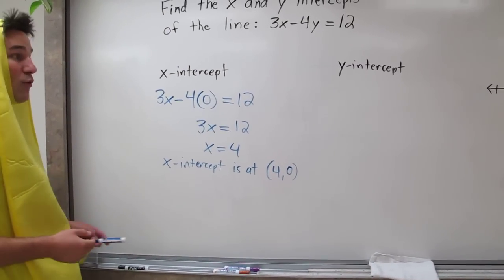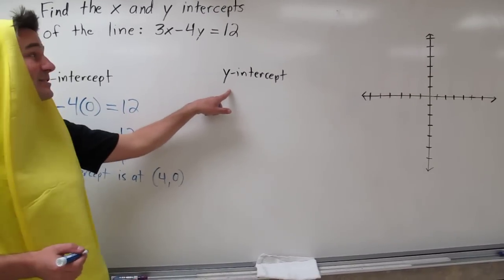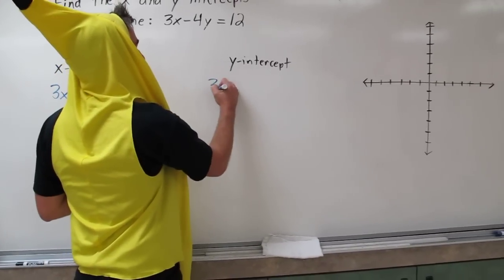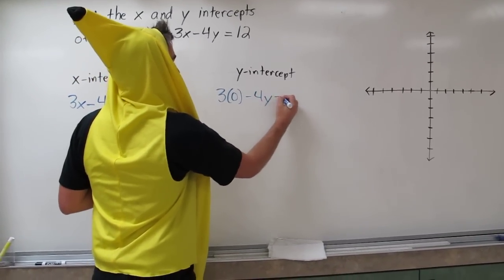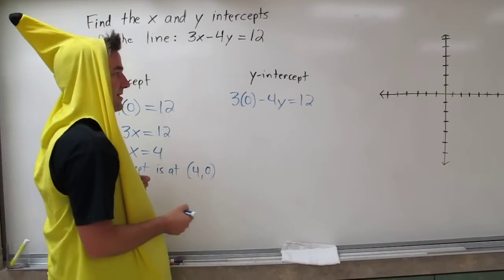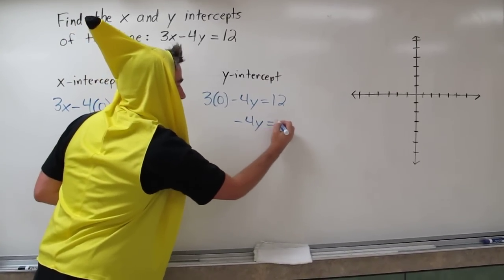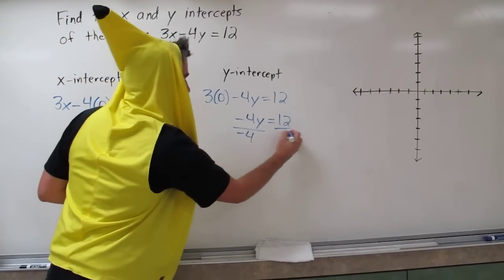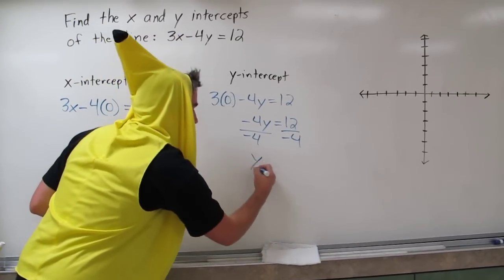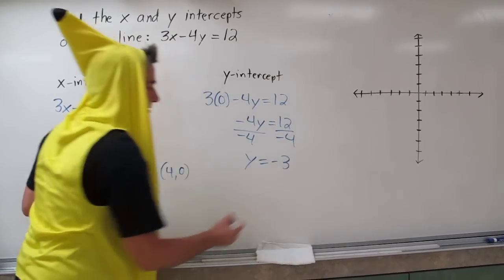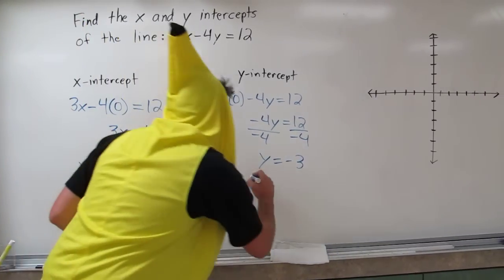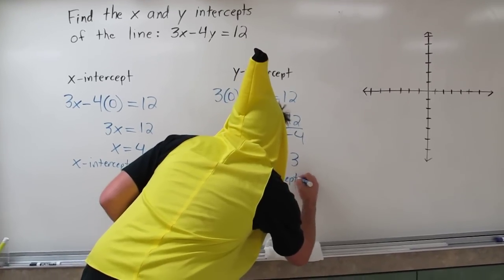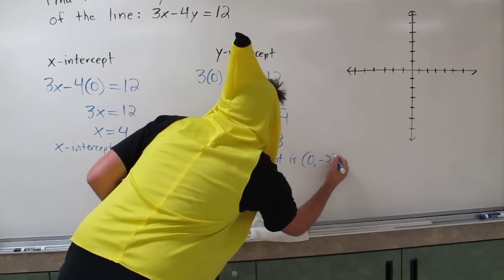Now let's find the y-intercept. To find the y-intercept, we're going to plug in a 0 for x. So we have 3 times 0 minus 4y equals 12, and we end up with negative 4y equals 12. Divide both sides by negative 4, and we get y equals negative 3. So our y-intercept is at 0, negative 3.